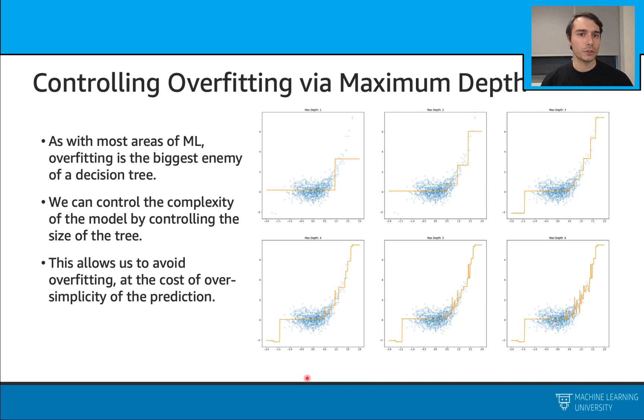As a last topic, we also looked at this overfitting problem. We said that we can control the complexity of our models, and in return, this will help with the overfitting problem. We saw that we can, for example, set the maximum depth of our tree. When this is a small number, we will have a simple tree, and we will be less likely overfitting.